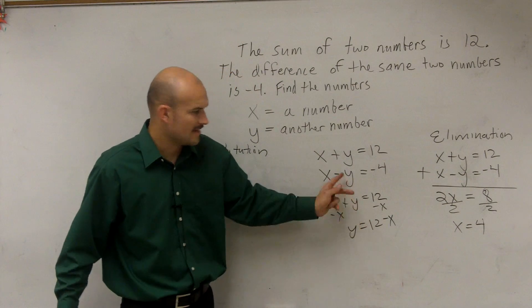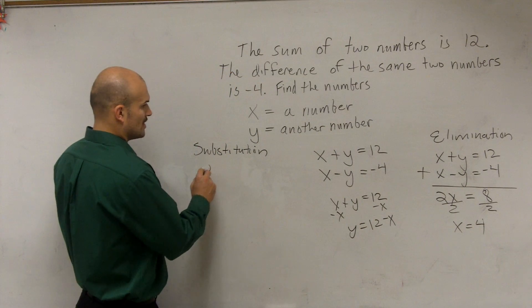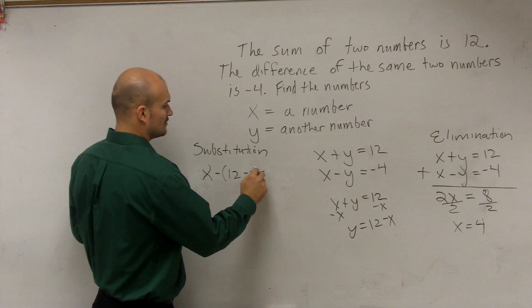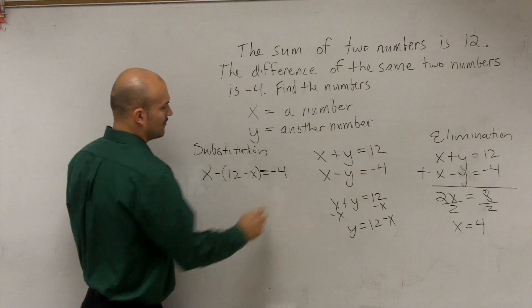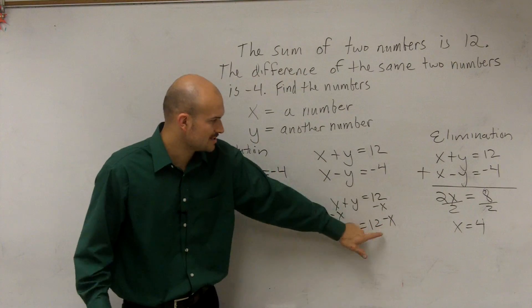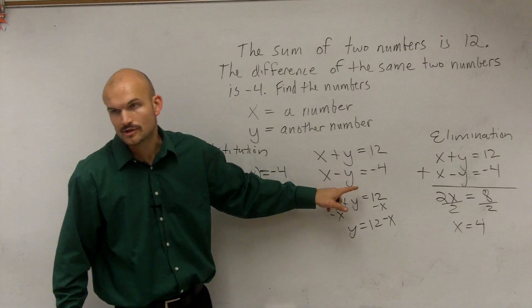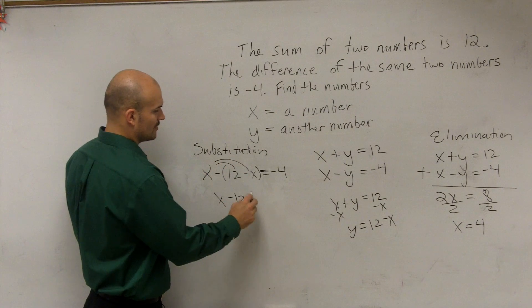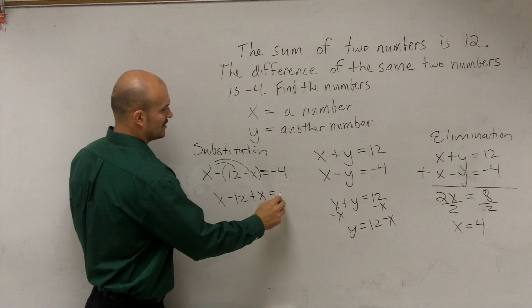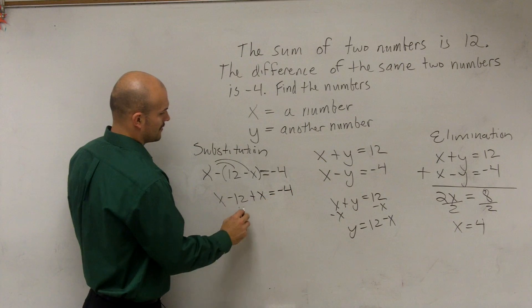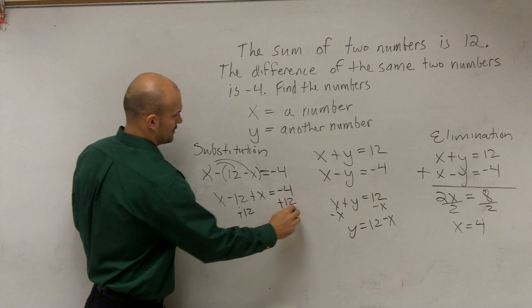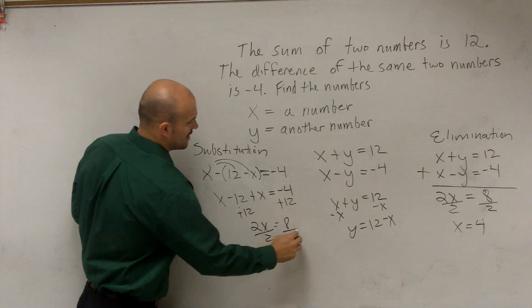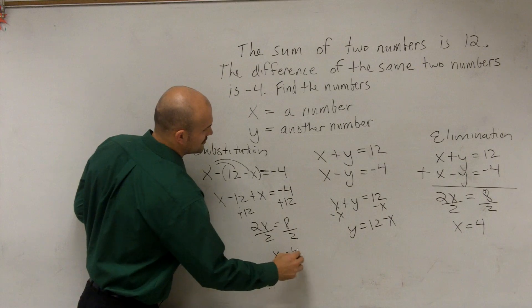I now plug that into my other equation. So I'd have x minus 12 minus x equals negative 4. So I take whatever this equation is and plug it in for y of the other equation. I now do the distributive property. So I have x minus 12 plus x equals negative 4. Add the 12. x plus x is 2x equals 8. Divide by 2. x equals 4.